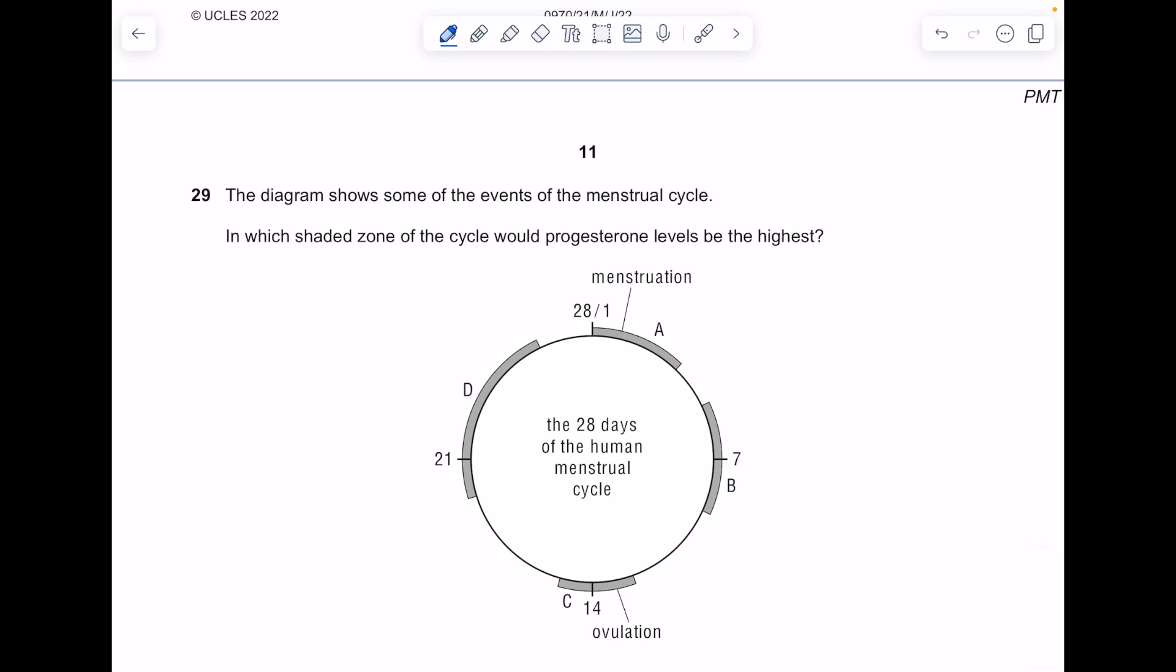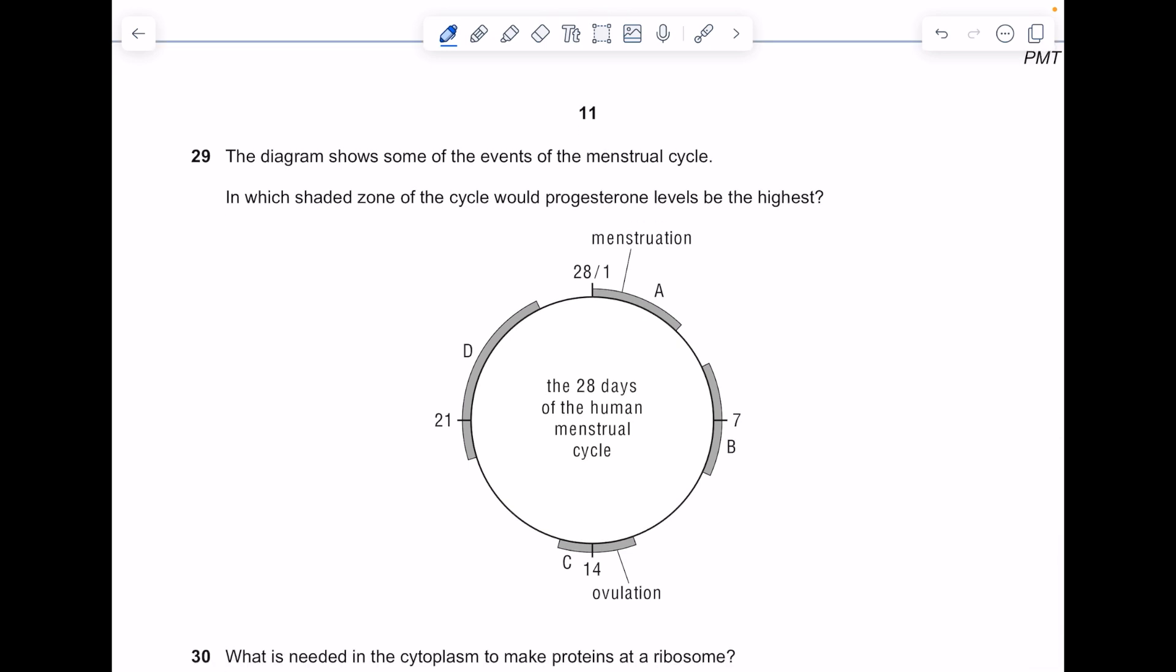The diagram shows some events of the menstrual cycle. In which shaded zone of the cycle would progesterone levels be the highest? Progesterone is released by the corpus luteum in the ovary. Its role is to maintain the uterus lining. The egg has been released from the ovary here at ovulation, and later on in that menstrual cycle you'll expect that uterus lining to be needing to be maintained, which is why the answer here is D.